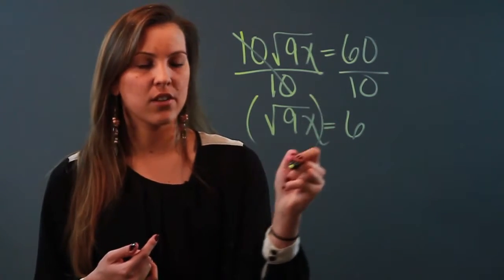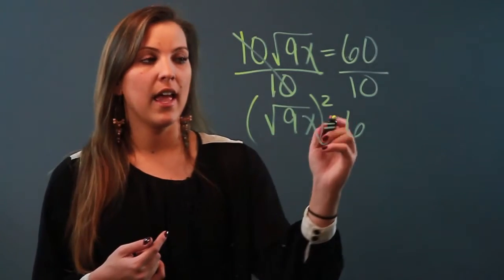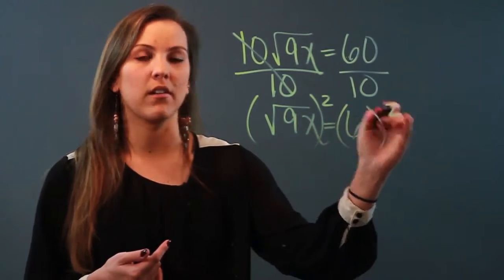So what I'm going to do is take this entire side and square it and then of course I have to take the other entire side and square it as well.